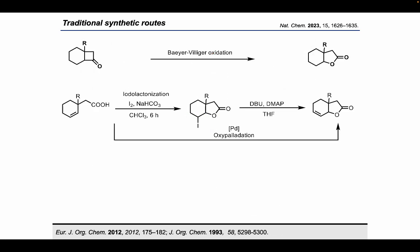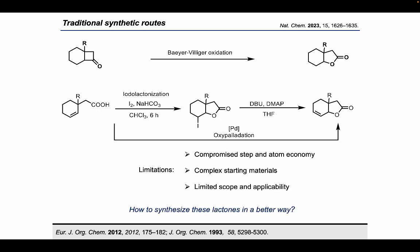But how do we prepare such bicyclic lactones? Some of the most traditional routes are Baeyer-Villiger oxidation, in which a ketone is converted to an ester, or iodolactonization, in which an alkenoic acid is converted to a lactone, or oxypalladation, which does the same job. However, some of the major limitations of such methods are that they require highly designed starting materials, which are often not readily available, and it also takes multiple steps instead of a single step, which eventually limits the scope and applicability of such methods.